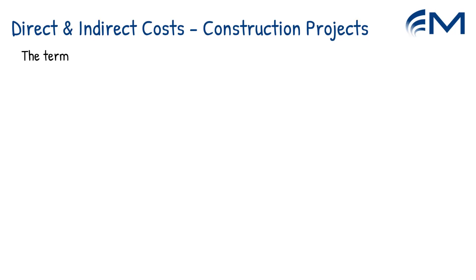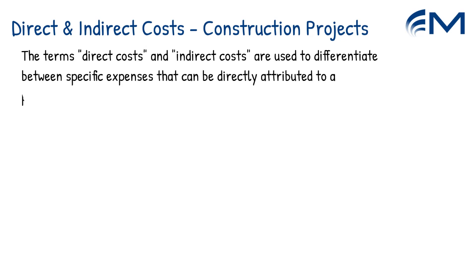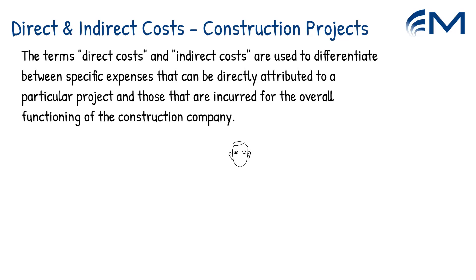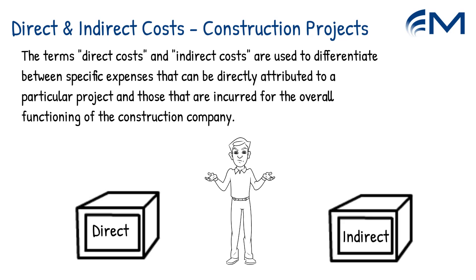In construction projects, the terms direct costs and indirect costs are used to differentiate between specific expenses that can be directly attributed to a particular project and those that are incurred for the overall functioning of the construction company. This video takes a look at the types of items which fall into each category, starting with direct costs.